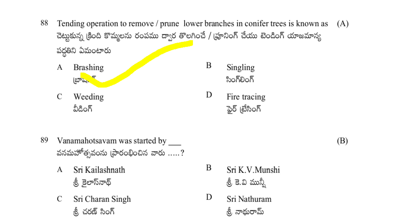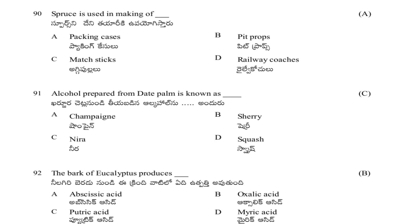Van Mahotsavam was started by: Kailashnath, Sri K.V. Munshi, Sri Charan Singh, or Sri Maduram. The answer is Sri K.V. Munshi — this is related to the forestry subject.